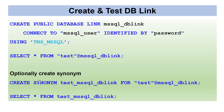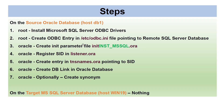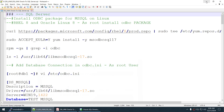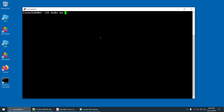Optionally, if you want to create a synonym, you can do so to refer to the remote table without appending the DB link name each time. Now let's summarize: install the SQL Server ODBC drivers, create the ODBC entry, create the init parameter file, register the SID in listener.ora, create the TNS entry, create the DB link, and optionally create a synonym. Everything is done on the Oracle server.